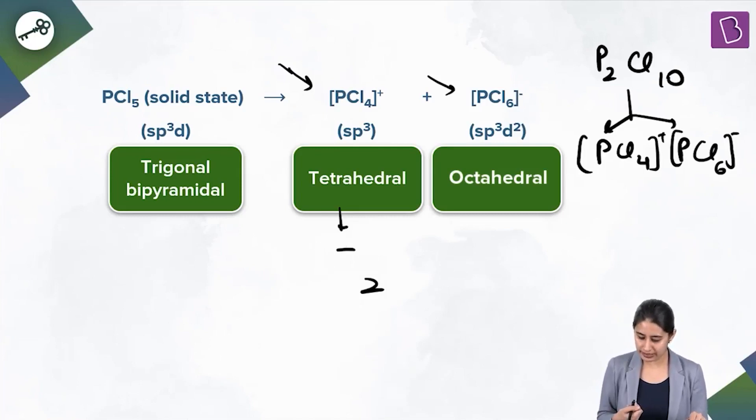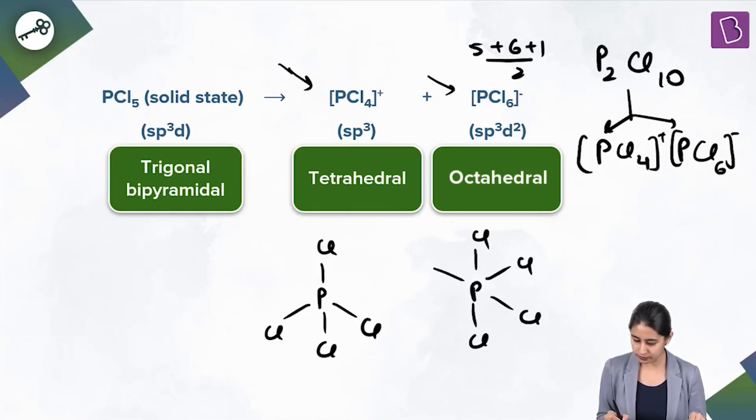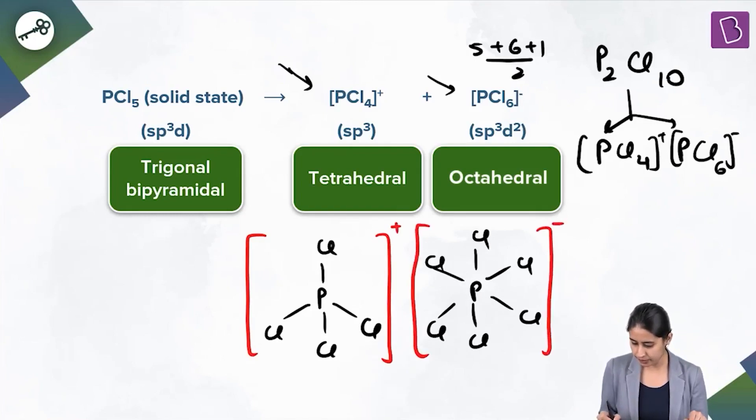PCL4+ exists like tetrahedral and PCL6-. That means 5 plus 6 plus 1 by 2, 12 by 2, that means SP3D2, existing like octahedral. Don't forget to mention the charges. PCL5 exists in ionic state as PCL4+ and PCL6-.